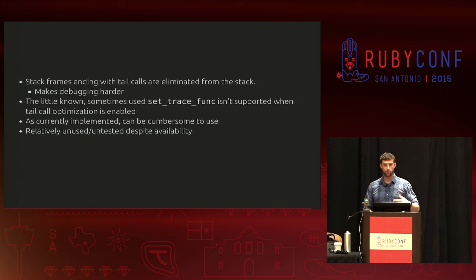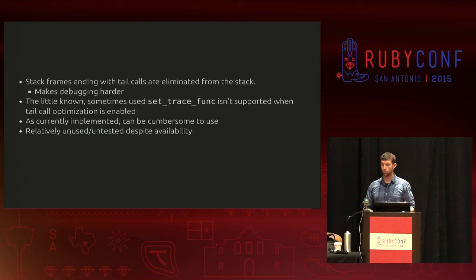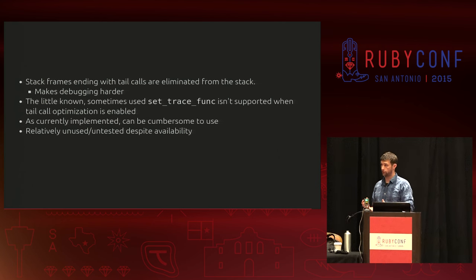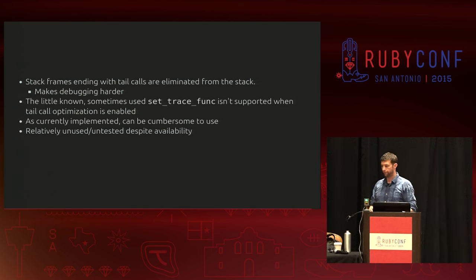I spun up Ruby 2.2.3 with tail call optimization enabled and tried to run the Rails test suite — it was pretty good, but there were definitely things that failed that didn't fail with a vanilla 2.2.3. I'd say that's an argument against running your Rails server with tail call optimization enabled. But I think there's still potential for situations where using a strategy gives you elegance, performance, and solutions you wouldn't otherwise get to without tail call optimization.